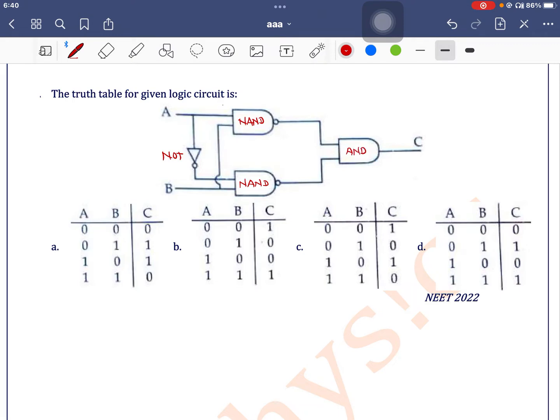So the input to the upper NAND gate is A and B, and the output is AB̄. And for this lower NAND gate, the output is ĀB̄.